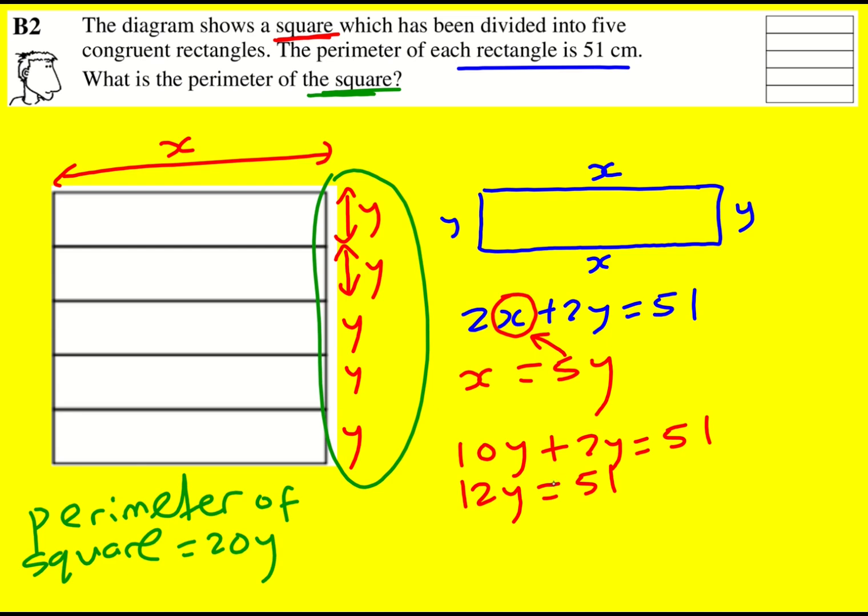Okay, we're back to having 12y. I can divide through by 3, because 3 goes into 51, the digits add up to a multiple of 3. So 4y is going to equal, 3 into 51 goes 1, 7, 17.